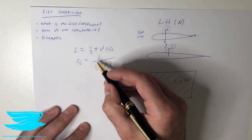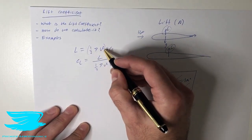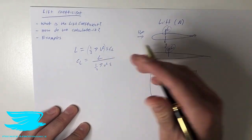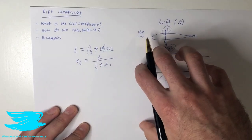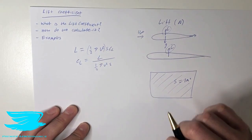So just as a side note, this term here, so half rho v squared is the dynamic pressure, and we use it a lot. If you looked at our drag coefficient video, you would have seen that there as well.